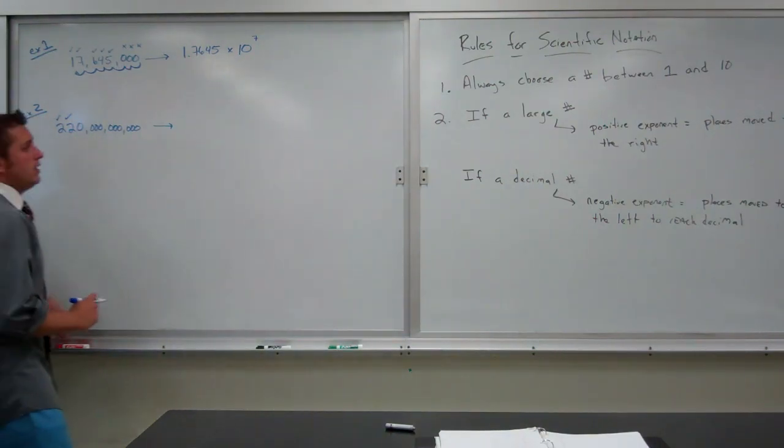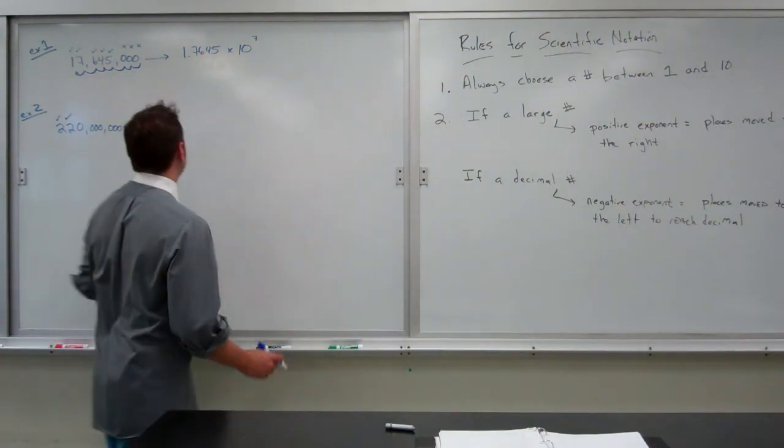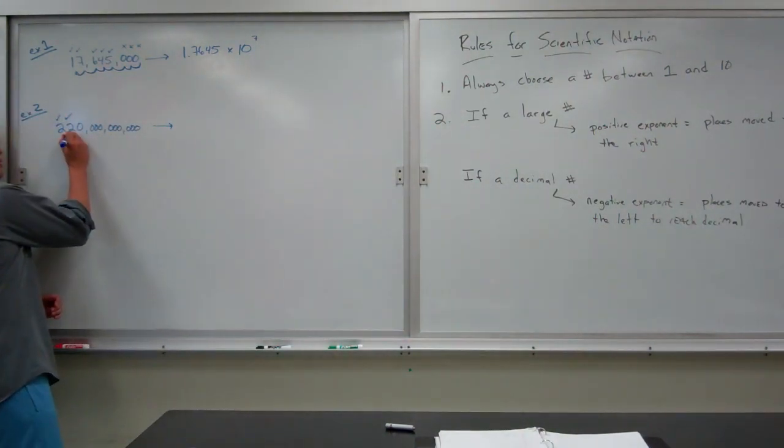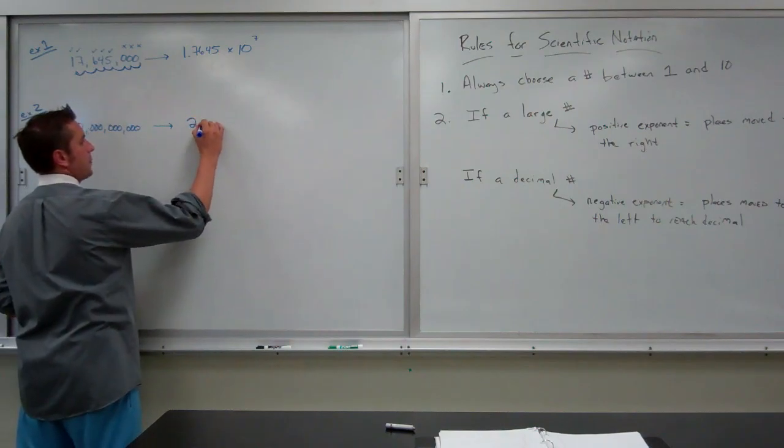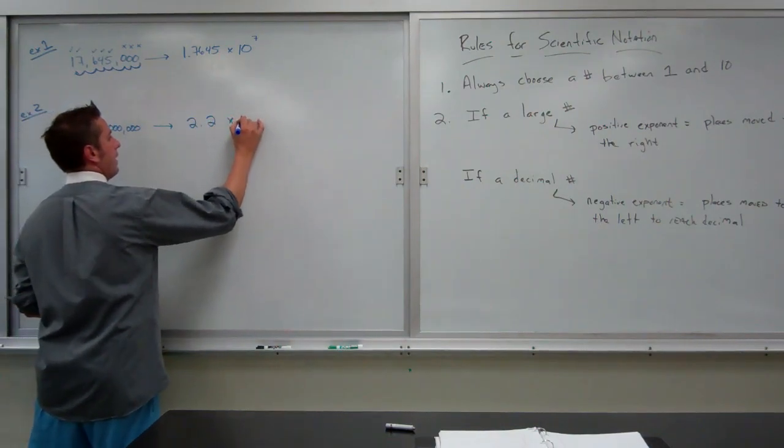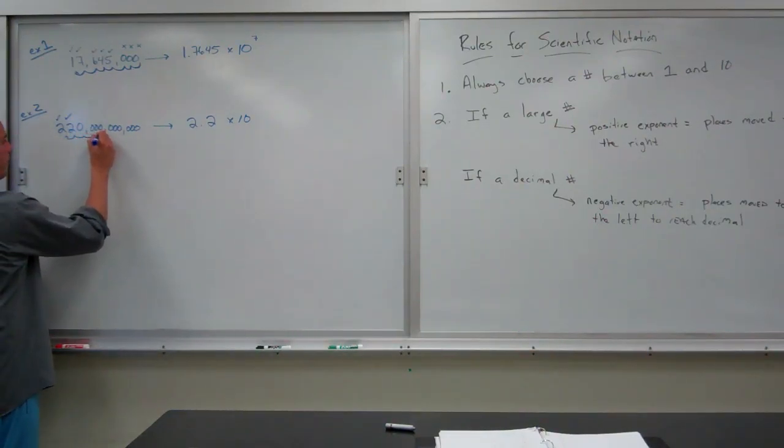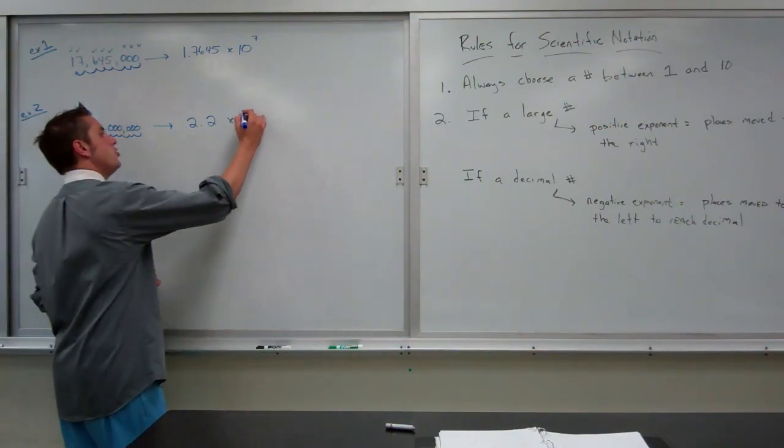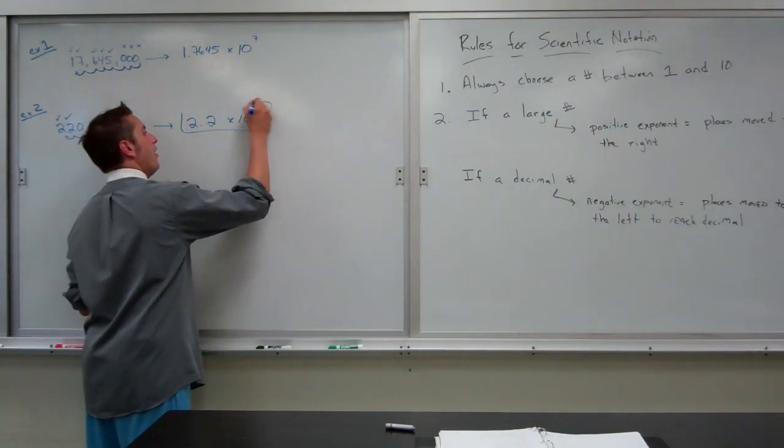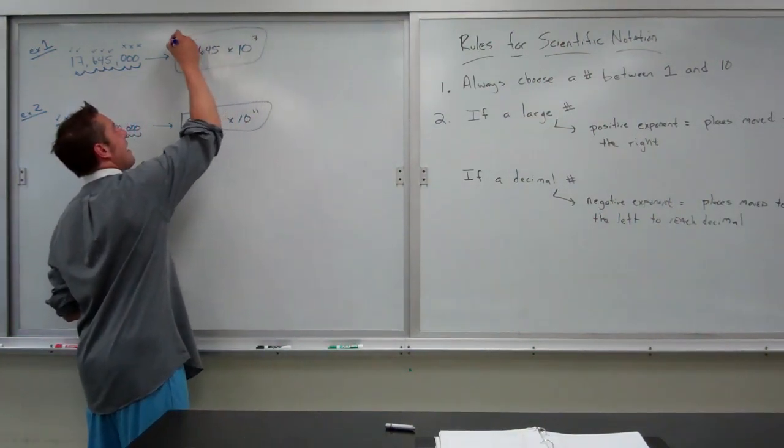So, when I choose my number between 1 and 10, I'm going to choose the number 2.2 times 10 and then see how many places to the right we move. 1, 2, 3, 4, 5, 6, 7, 8, 9, 10, 11. 2.2 times 10 to the 11th power.